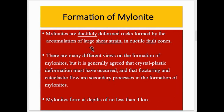Mylonites are ductilely deformed rocks formed by the accumulation of large shear strains in ductile fault zones. There are many different views on the formation of mylonites, but it is generally agreed that crystal plastic deformation must have occurred, and that fracturing and cataclastic flow are secondary processes in their formation.